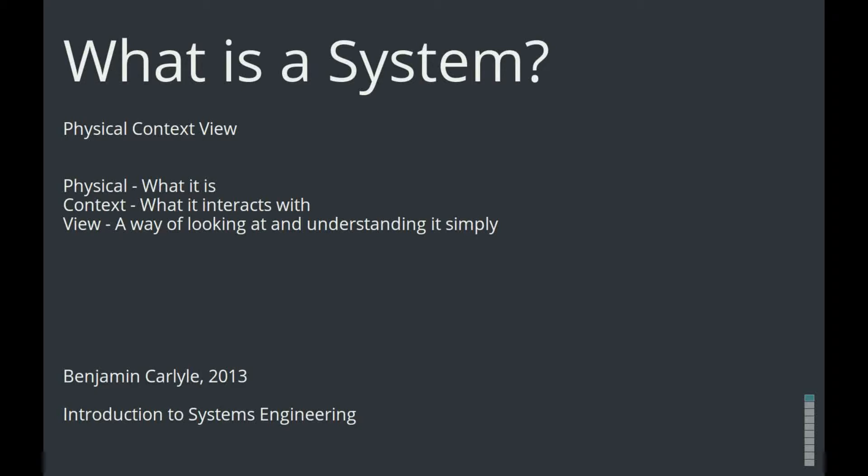What is a system? Physical, context, view. What is physical? What it is. What does that mean? The mouse. It is a mouse.